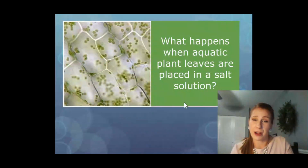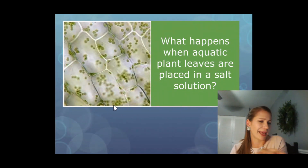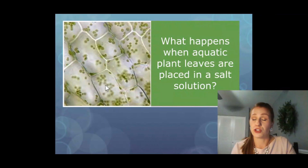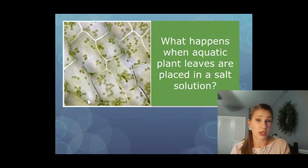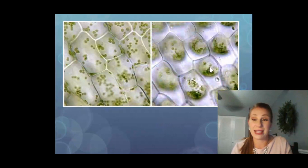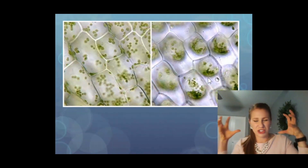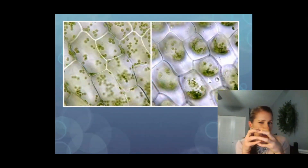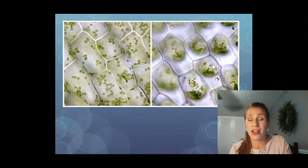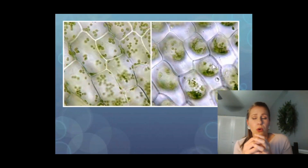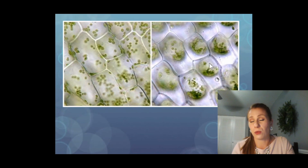What happens when aquatic plant leaves are placed in a salt solution? If we take an aquatic plant leaf and put it in salts with barely any water, are these cells going to shrink or swell? If you have too much salt you usually get dehydrated, so you would expect them to shrink. You can see that cell used to be all around the edges — the cell wall is still there, but the cell membrane has shrunken because water has left the cell, making the vacuole really small.